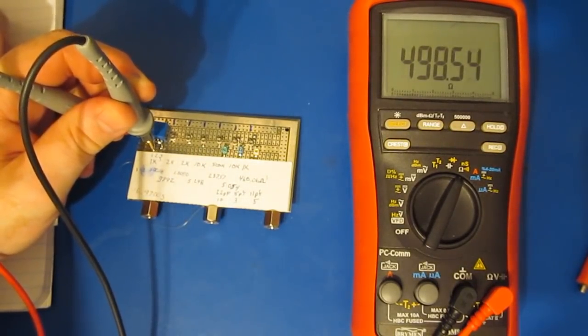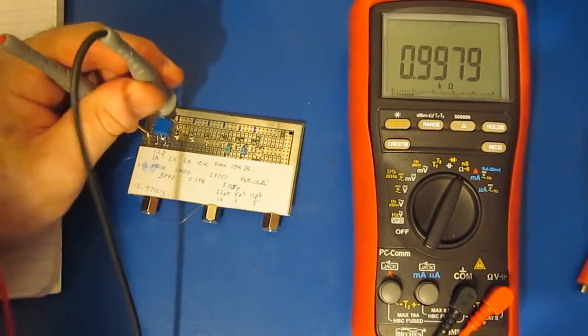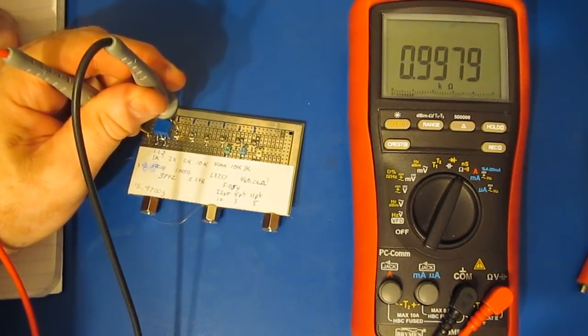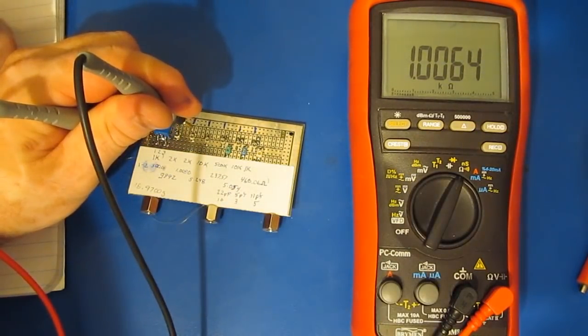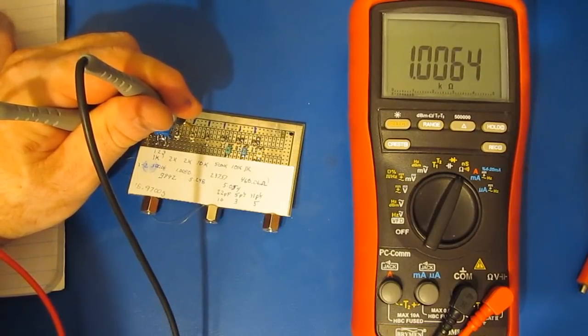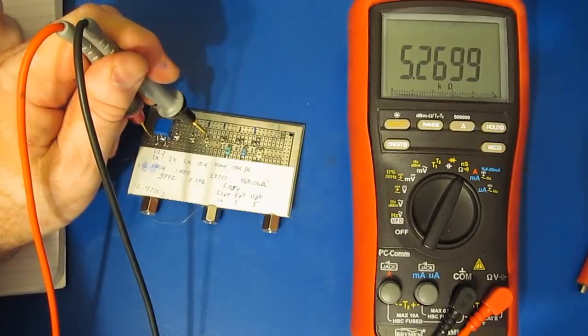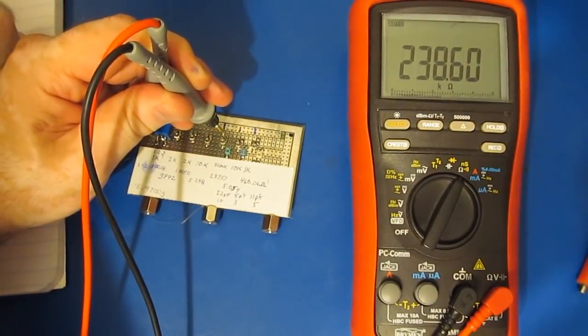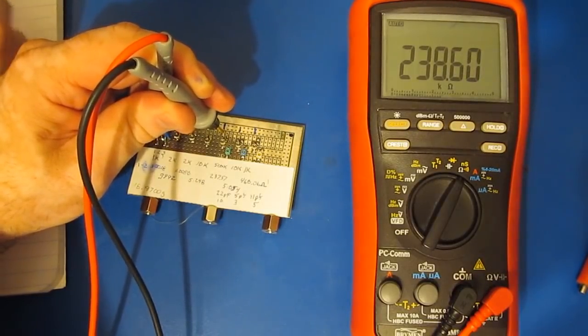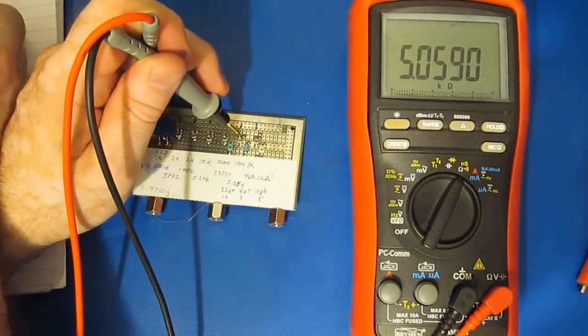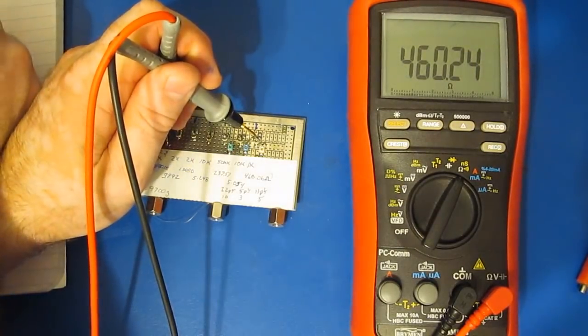All right, let's go ahead and remeasure all of our pots. As you can see, 498.54. The next one is 997.9 ohms. The next one is 1.0064. The next one is 5.2699. Next we have 238.60. Next we have 5.0590. And the last one is 460.24.